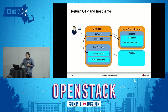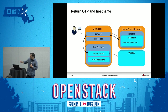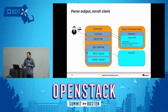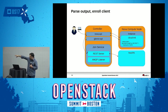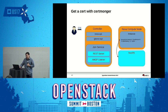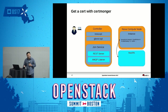At that point, the OTP and the hostname are returned back to Nova, and from there returned back to the instance, where it is parsed by the CloudInit script. It gets the OTP, and enrolls the instance as an IPA client by calling IPA client install with that particular OTP. And at that point, you're essentially done — you have an enrolled IPA instance with an identity.